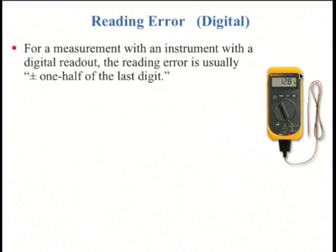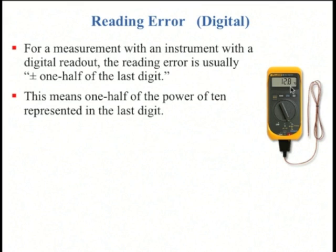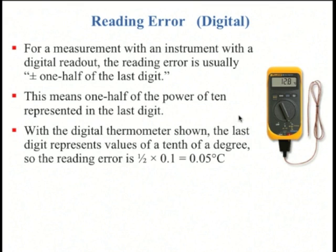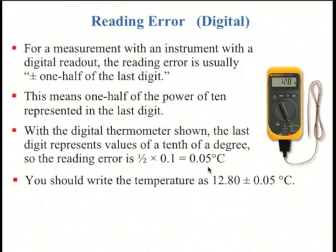Now for a digital instrument, usually it says somewhere in the manual that the reading error is plus or minus one half the last digit. What that means is that the last digit is some power of 10, and one half of one in that last power of 10 is your error. So if it says 12.8, the last power of 10 is 0.1, so half of that is 0.05. We would write this temperature as 12.80 plus or minus 0.05 degrees Celsius. It's good to put another zero there just to make the last tenth place in your number match with the last tenth place in your error.